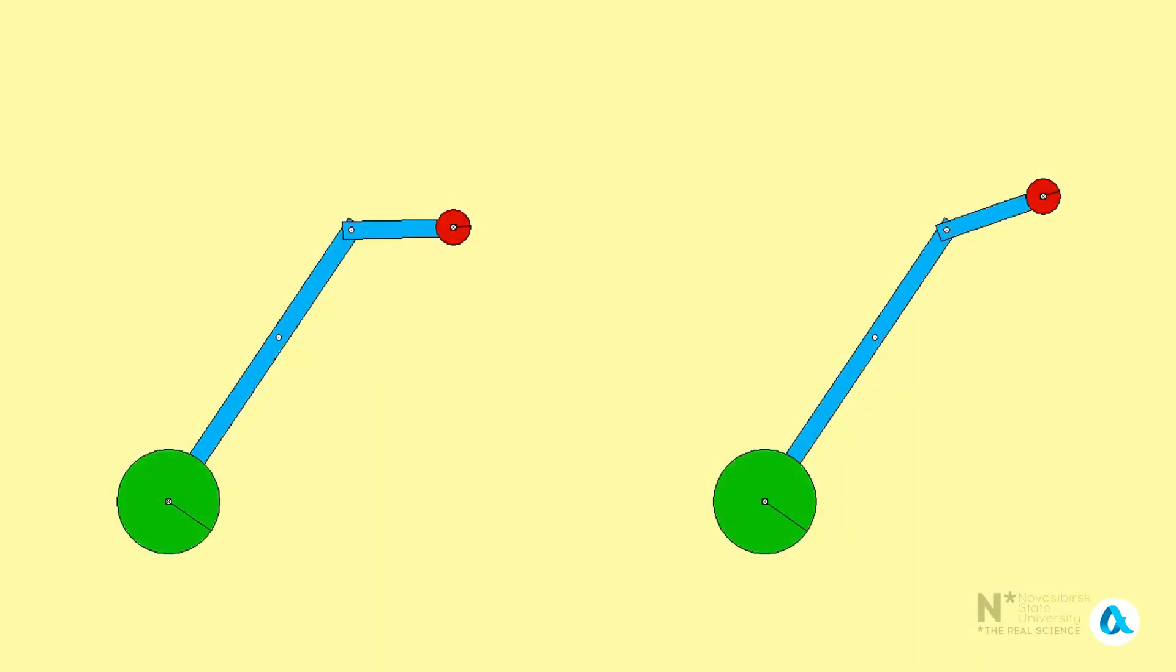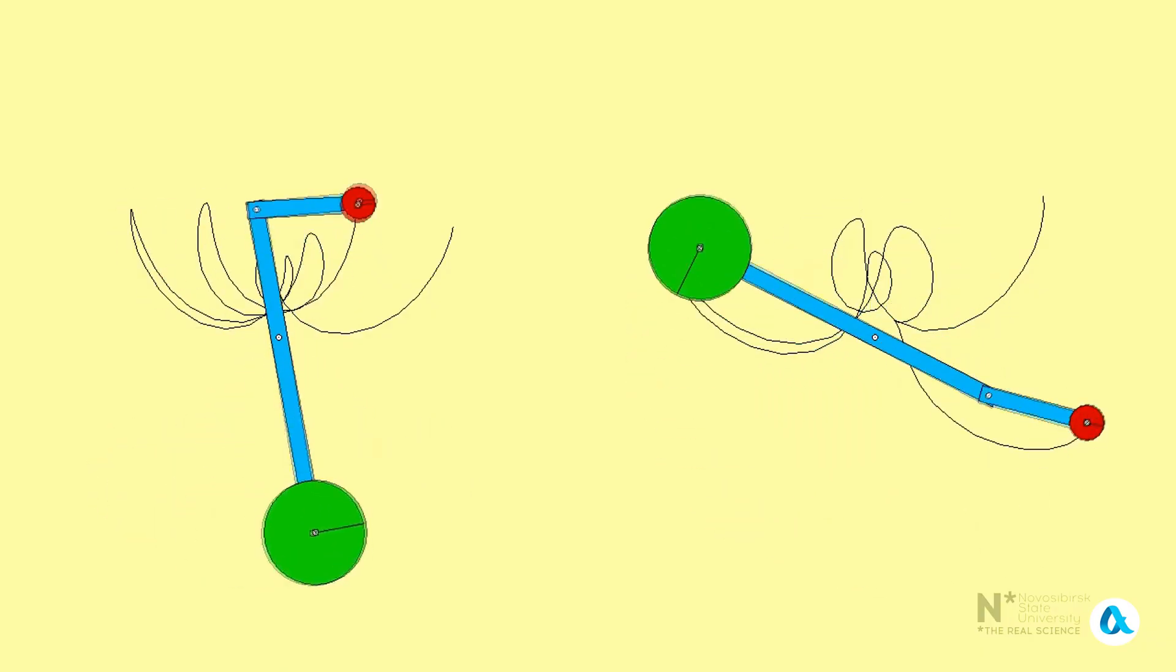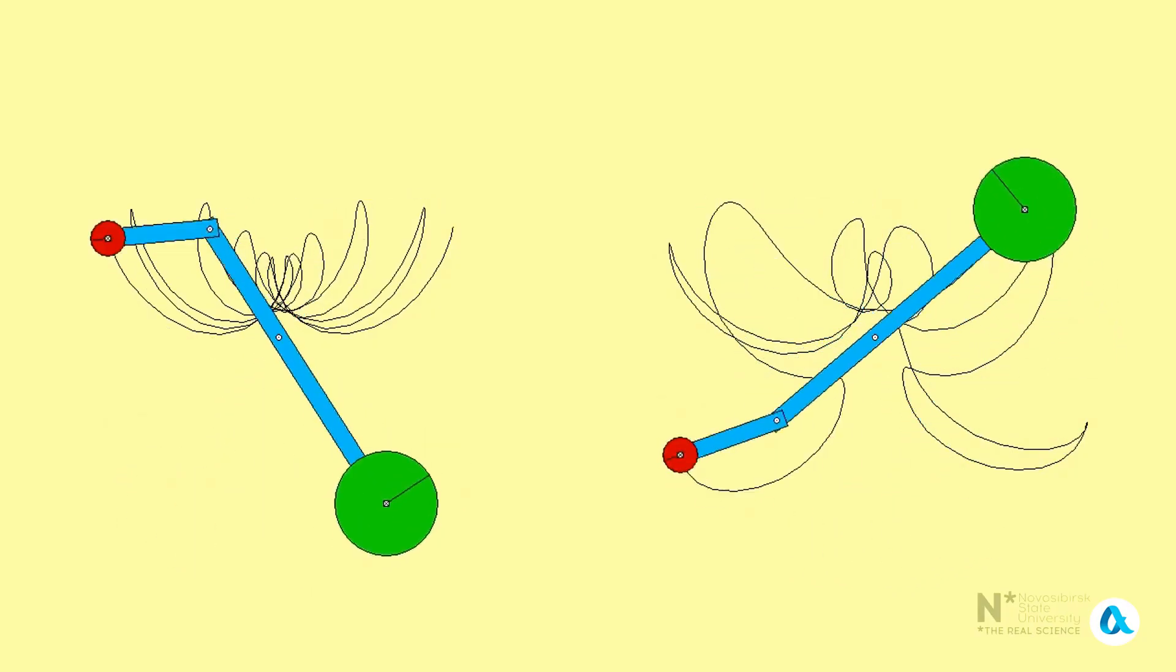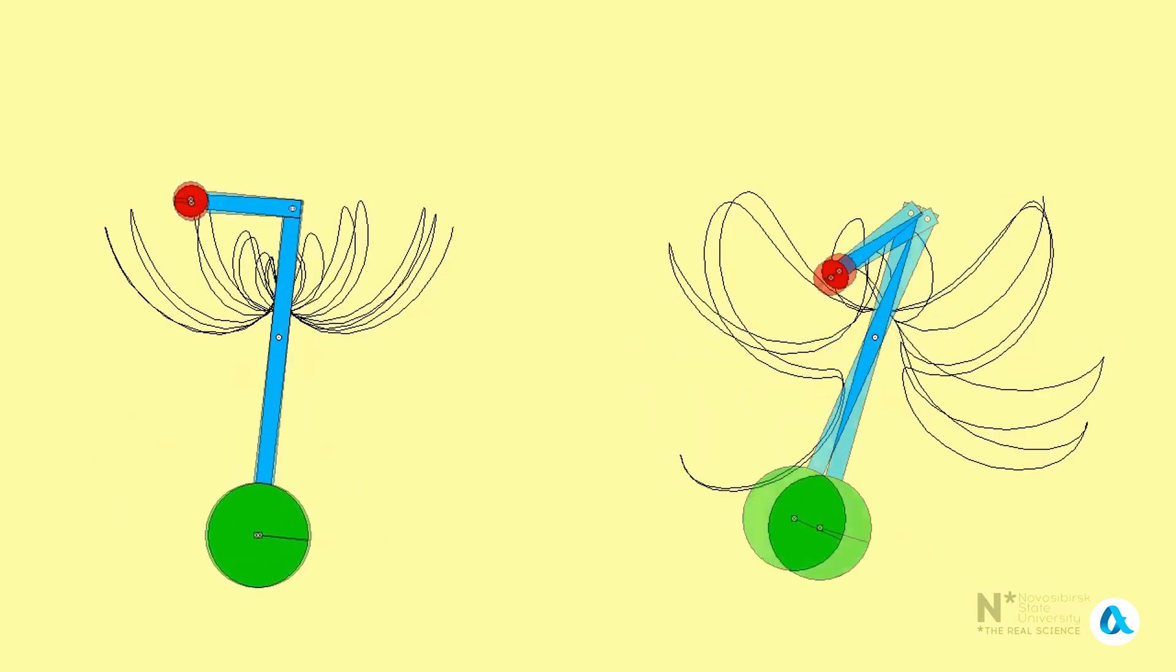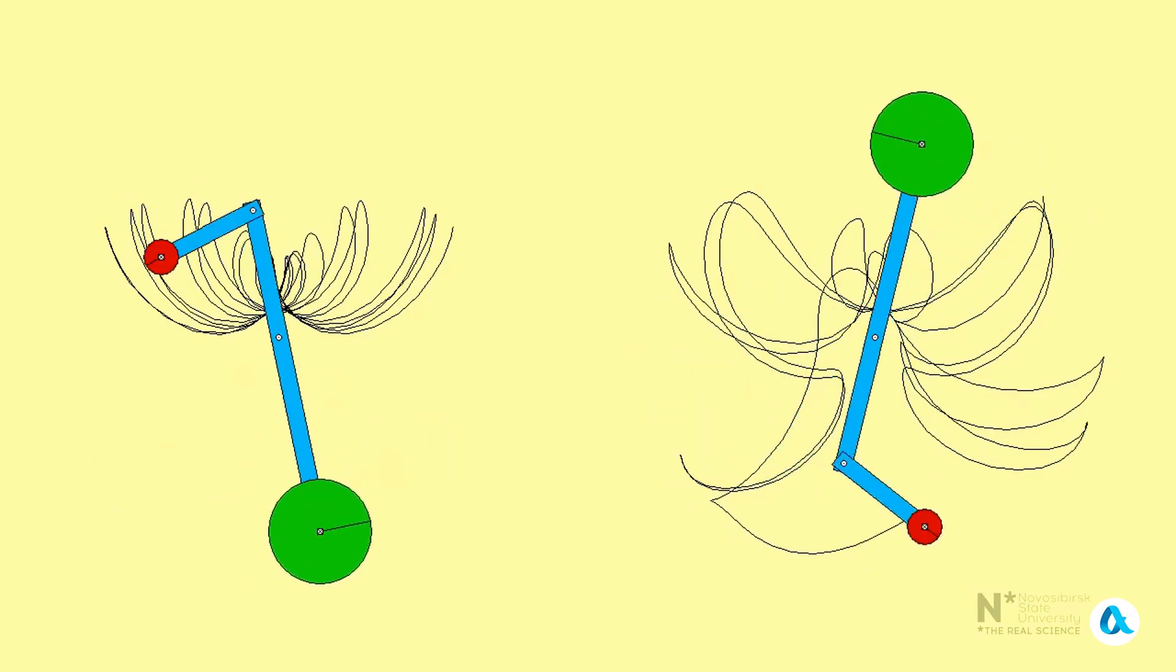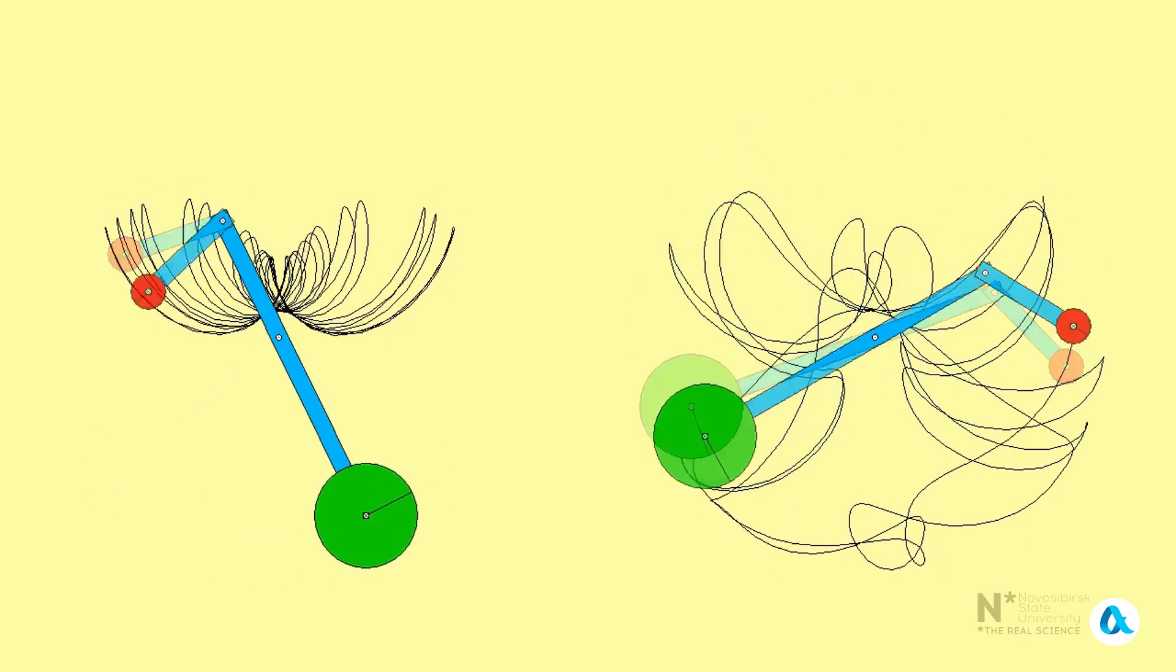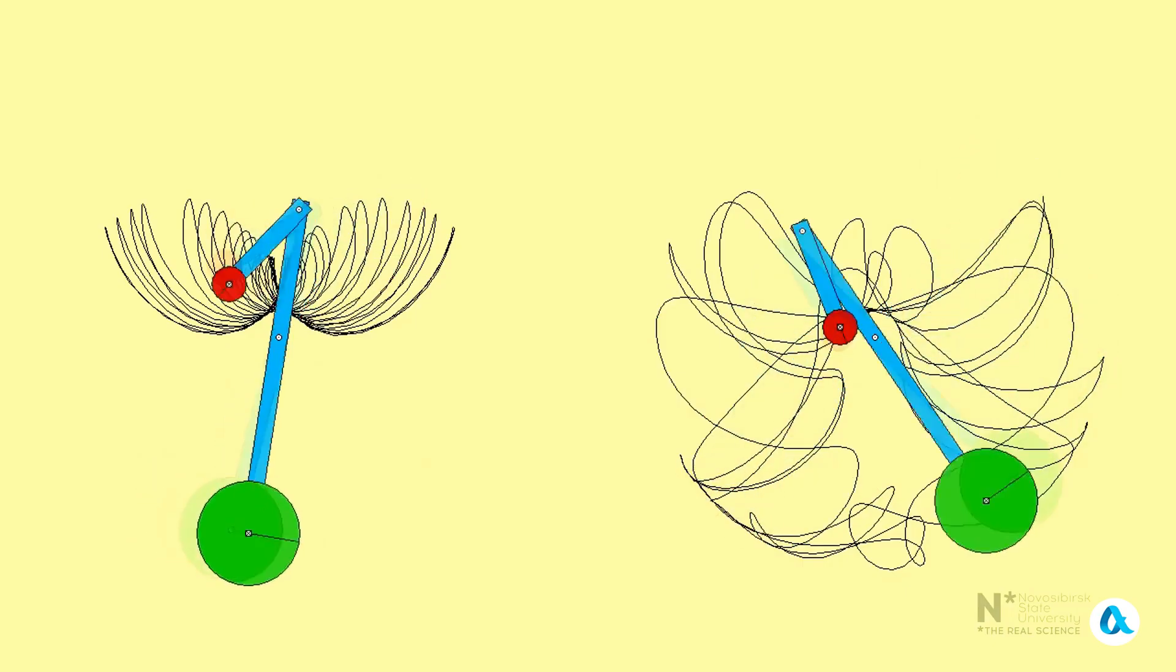Let's take two identical double pendulums and raise the small weight of the right pendulum a bit higher so that at the start it has more potential energy. At first, these pendulums behave very similarly. But then the larger weight of the right pendulum starts to rise higher and higher and at some point makes a complete rotation. Meanwhile, the left pendulum makes fairly regular movements and it seems that the trajectory of its upper weight will not go beyond the flower-like pattern it has already drawn by this time.